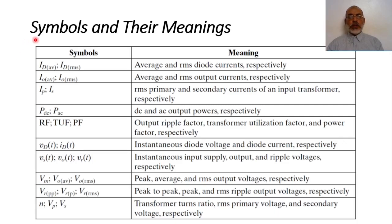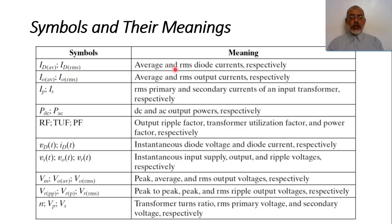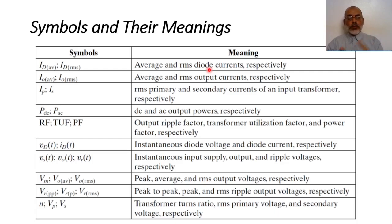We start with some symbols and their meaning, and we are going to use these symbols throughout our course, so please take care of the definition of everything. Id average and Id root mean squared are the average and root mean squared current of the diode. According to the current passing this route, we can take the average value and the root mean squared value.